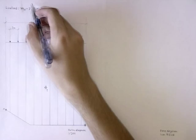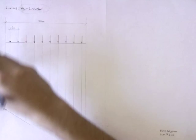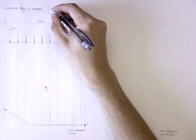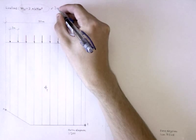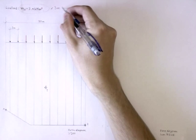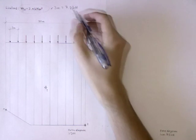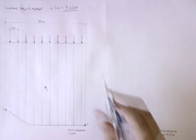So now I will just take the line load, 2.4 kN per meter, and multiply it by 3 meters, which is going to give me 7.2 kN point load.